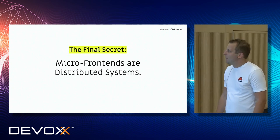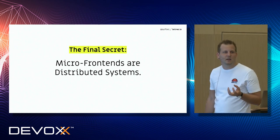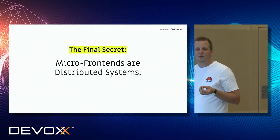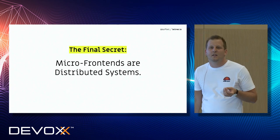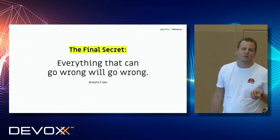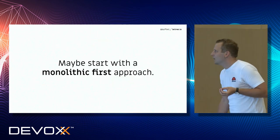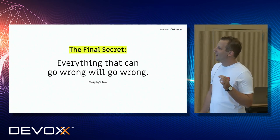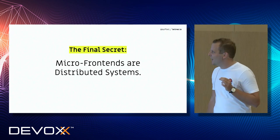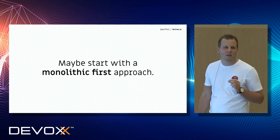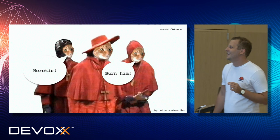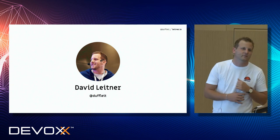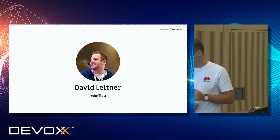There's a final secret: micro frontends are distributed systems. This sounds obvious, but it's fundamental to understand. Who knows the only real definition of distributed systems? Everything that can go wrong will go wrong — and that's also true for micro frontends. So maybe, as micro frontends are distributed systems and everything that can go wrong will go wrong, maybe start with a monolith-first approach. Thank you very much. I hope this was useful. I'm around for the rest of the day if you have questions.